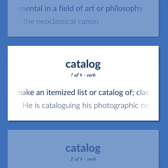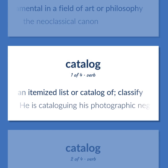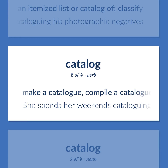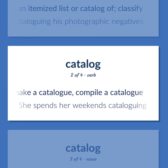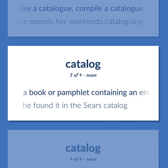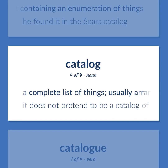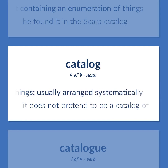Catalog: Make an itemized list or catalog of; classify — 'He is cataloging his photographic negatives.' Make a catalog; compile a catalog — 'She spends her weekends cataloging.' A book or pamphlet containing an enumeration of things — 'He found it in the Sears catalog.' A complete list of things, usually arranged systematically — 'It does not pretend to be a catalog of his achievements.'